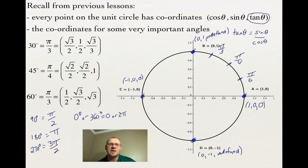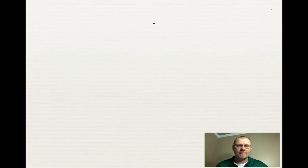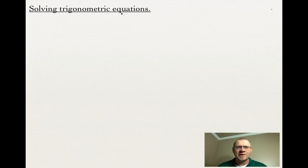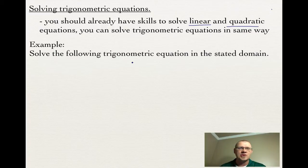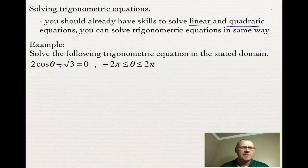Make a diagram of this unit circle with all the coordinates on it, because these values are all going to come into play when solving trig equations. Now, you should already have skills to solve linear and quadratic equations — and if so, solving trig equations isn't really that hard. For example, solve 2 cos theta plus root 3 equals 0, where the domain is between negative 2 pi and 2 pi, so we're working in radians.